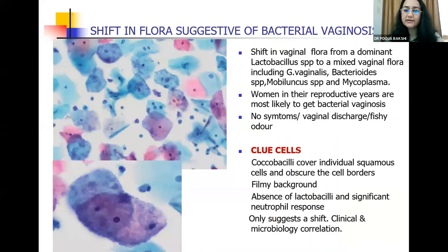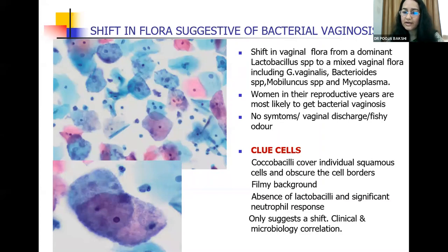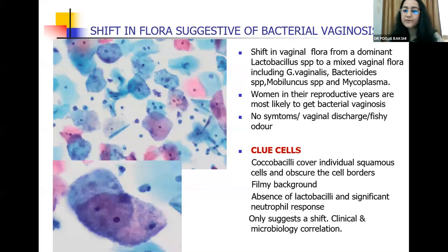Next we come to shift in flora suggestive of bacterial vaginosis. Lactobacilli is the dominant flora of the vagina, but when there is a shift to a mixed vaginal flora — which includes Gardnerella, Bacteroides, Mycoplasma — we suggest a shift in flora. Women mostly in the reproductive years get this, and there may be no symptoms, or the patient may have a watery vaginal discharge which is fishy in odor. It is recognized by the presence of clue cells — cocobacilli covering individual squamous cells and obscuring their cellular borders. Classically there is absence of lactobacilli and absence of a significant neutrophil response. You must correlate with clinical and microbiological findings to ascertain if there is a clinical infection.